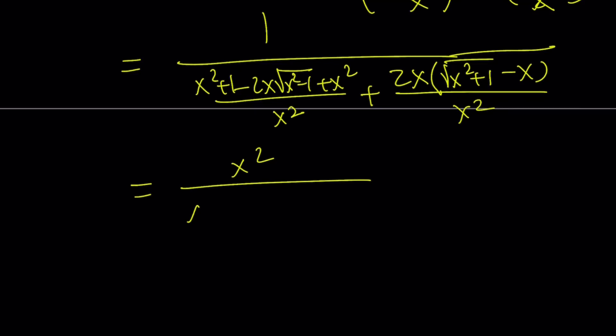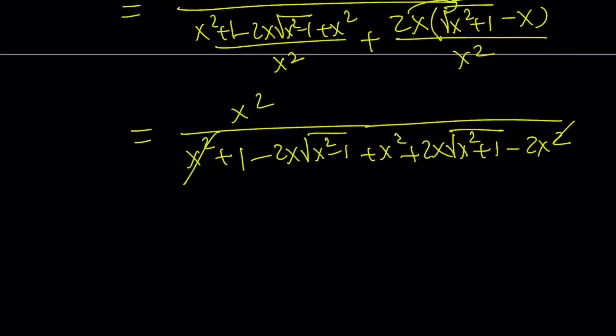At the bottom, I'm going to have x squared minus 2x times square root of x squared plus 1 plus x squared plus 2x times the radical minus 2x squared. x squared plus x squared are going to cancel out with the 2x squared, and I'll end up with negative 2x times the square root of x squared plus 1 and its opposite. These two are also going to cancel out, leaving us with x squared over 1, which is equal to x squared.